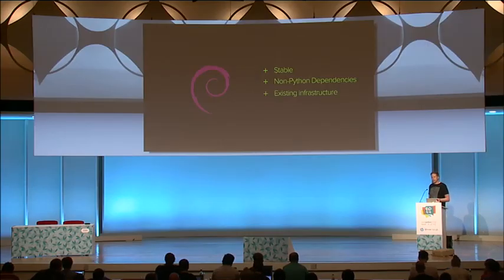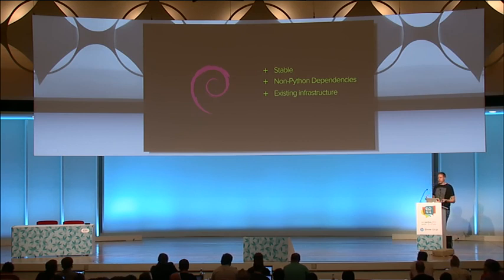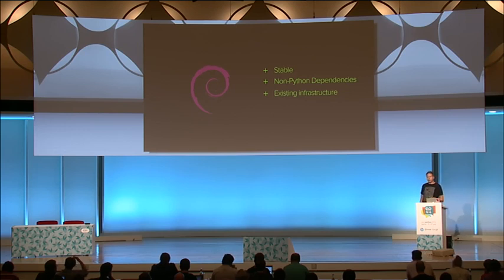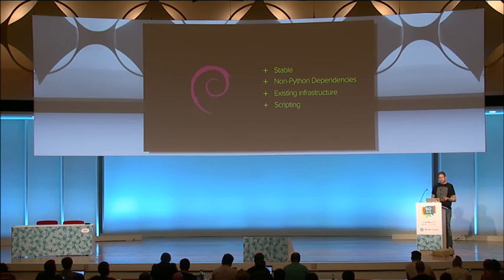Debian packaging also has pretty neat existing infrastructure — dedicated build tools, separated build environments like sbuild and chroot solutions, the possibility of running your own apt repository, and CI tool support like Jenkins or TeamCity. There's also quite nice scripting support: you can write scripts to clear caches before upgrade, restart services after installation, and even do database migrations in post-install scripts — though I don't necessarily recommend that last one.